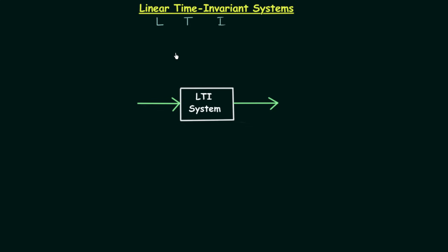The LTI system is composed of two types of systems. The first one is a linear system and the second one is a time invariant system, and because of this only we call it a linear time invariant system.